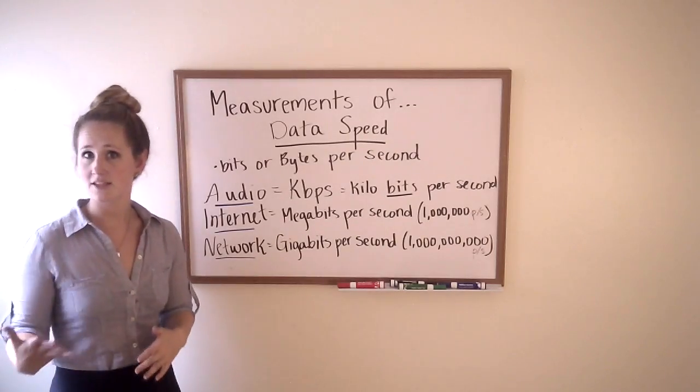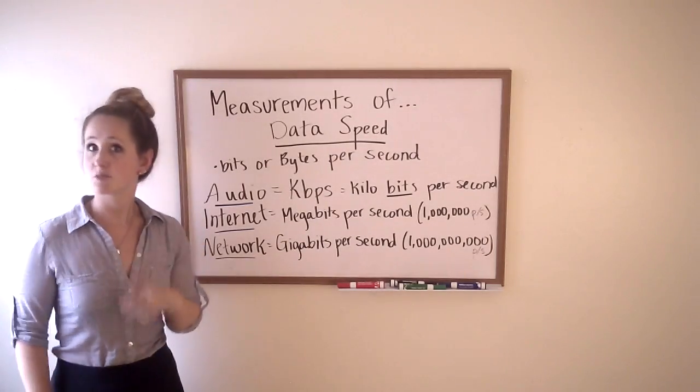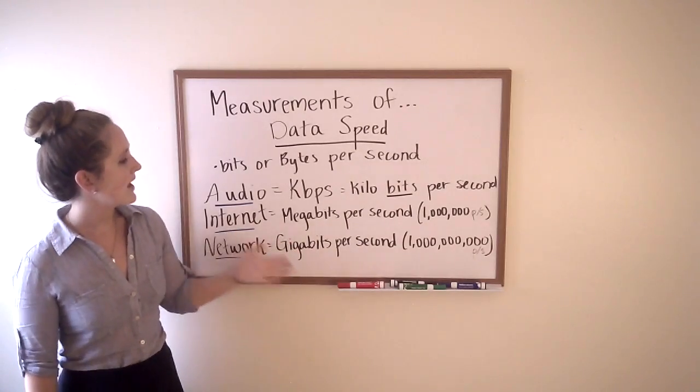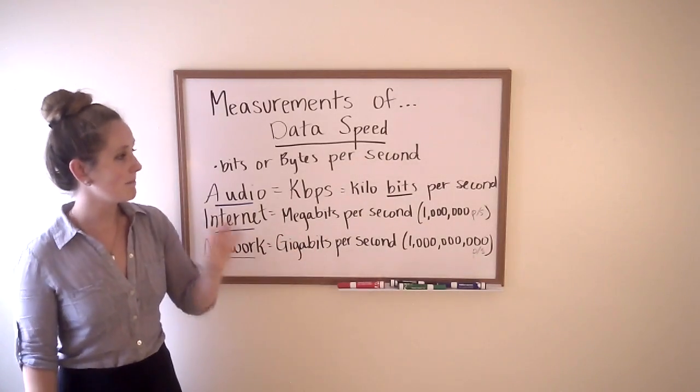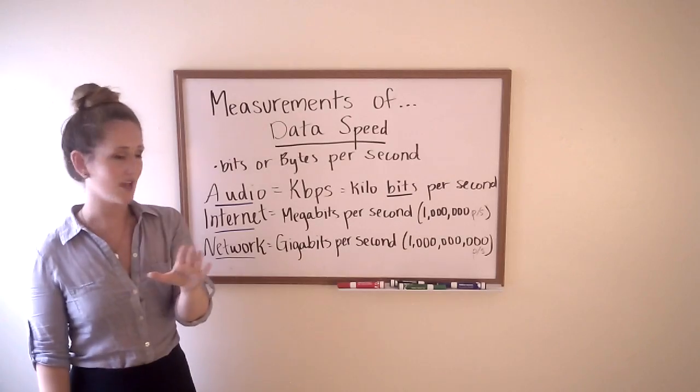Say we're talking about an internet speed, like the speed that your internet service provider gives you. They usually measure that in megabits per second, so one million bits per second.